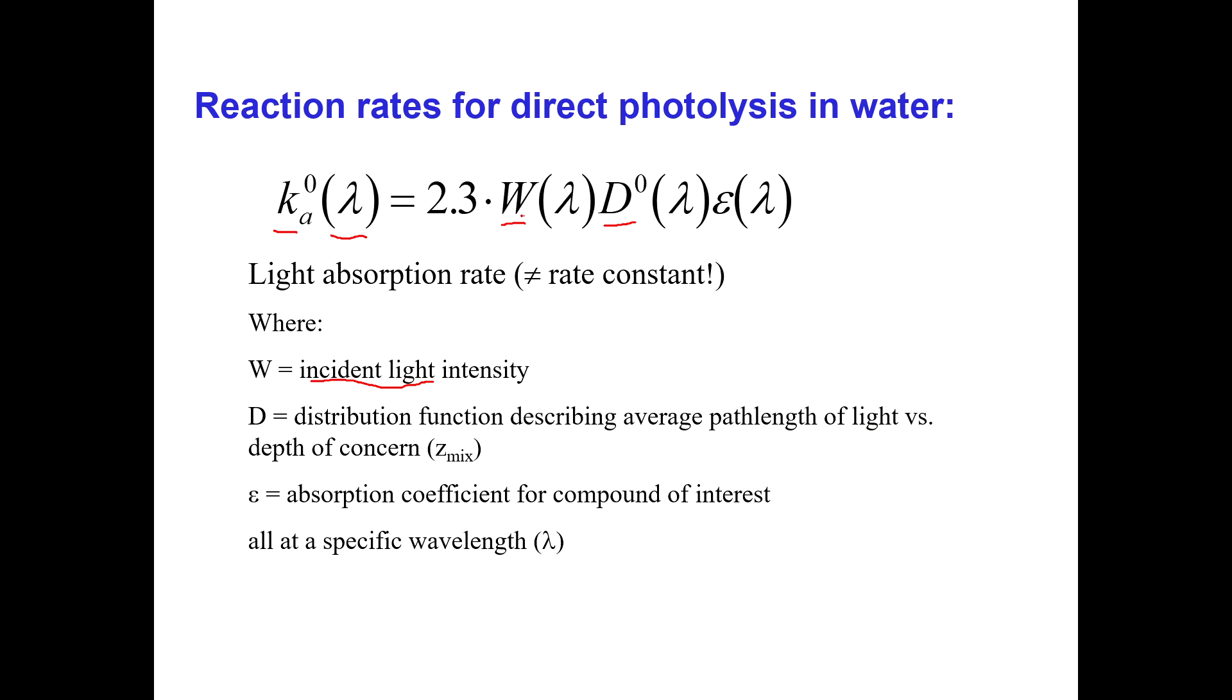So W is actually the light coming out of, that's ambient in the atmosphere, okay? And D is the distribution coefficient that has to do with the depth of the water body, because again, remember, Rene Schwarzenbach is really focused on the water column. He doesn't think very much about the gas phase. So he is describing this as direct photolysis rates in water. In water, you have to worry about the depth, how deep does the sunlight go into your water column?